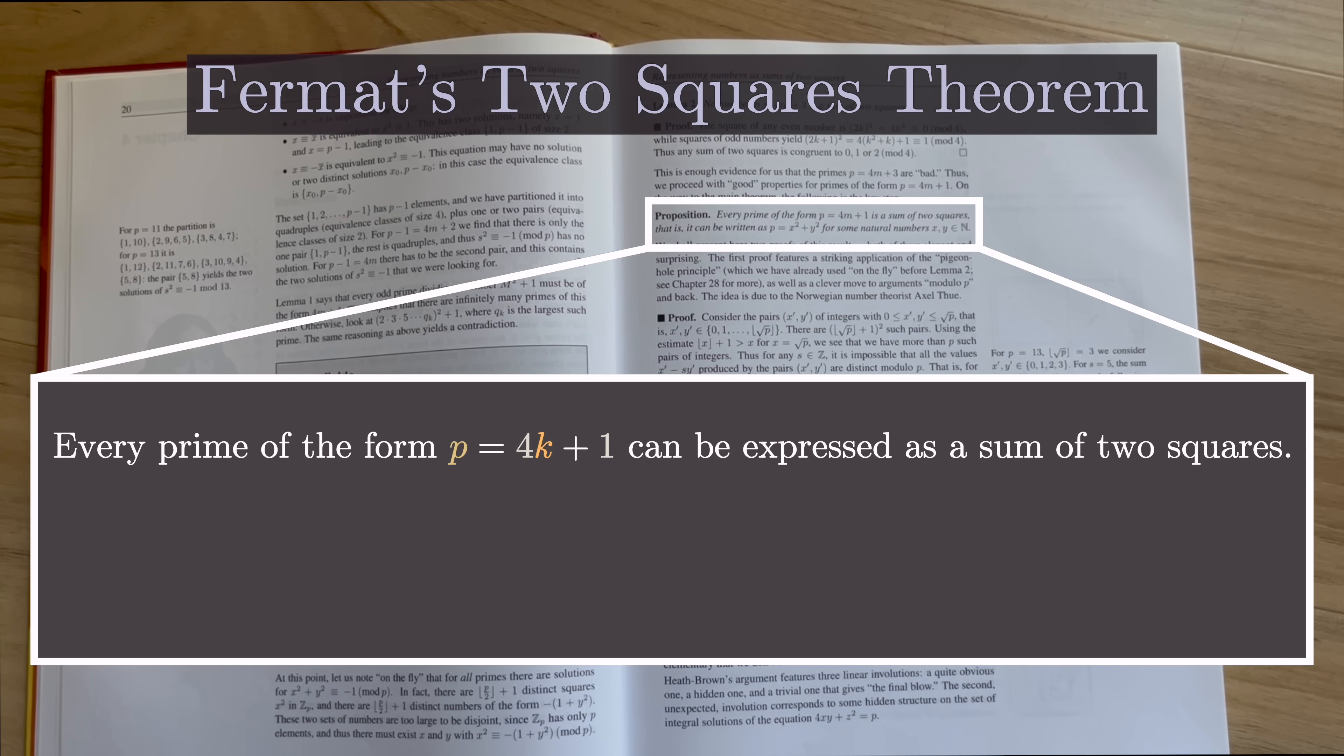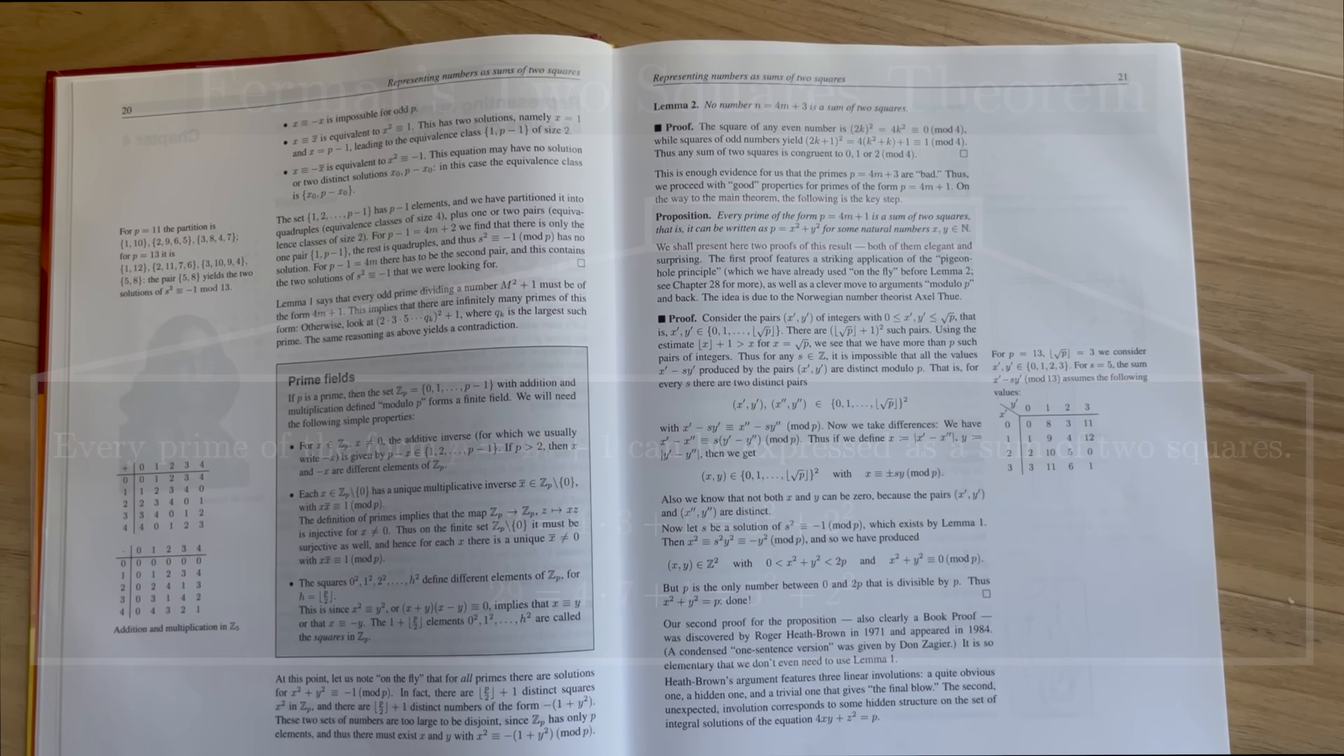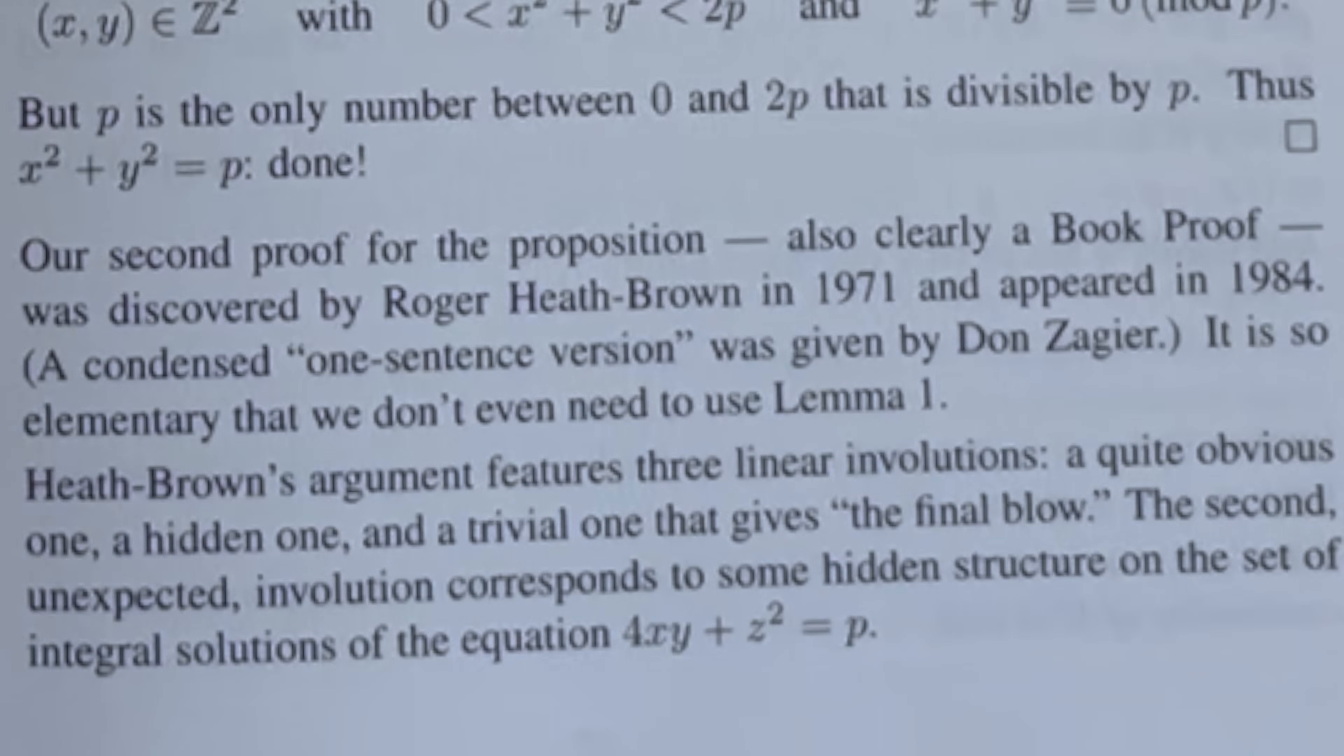The theorem today is Fermat's Two Squares Theorem. It states that every prime of the form 4k+1 can be expressed as a sum of two squares. For instance, 13 is 4×3+1 and can be written as 3²+2². 29 is 4×7+1 and can be written as 5²+2².